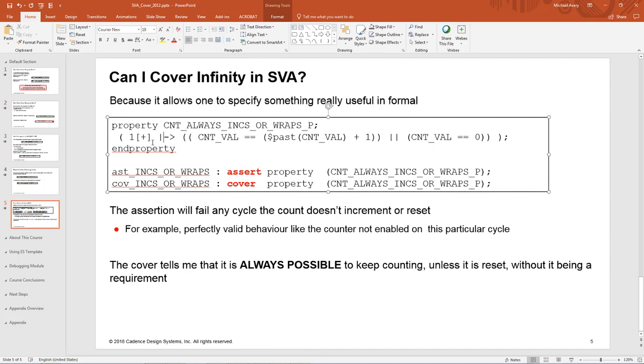With this property, you notice when I define it, I declared it in one place and I'm applying different verification directives to it here. If I said assert that property, I would actually be expecting that to fail if I had a design where there are reasons where the count doesn't always keep counting, like there's a counter enable signal that's held inactive. I would expect to see an assertion fail, but it's not a failure of my design—that's normal functional behavior.